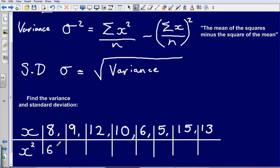So that's going to give me 64, 81, 144, 100, 36, 25, 225, and 169.